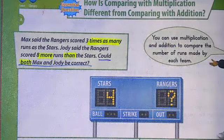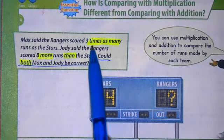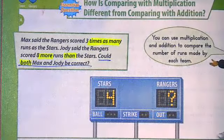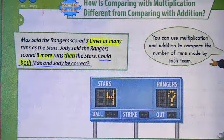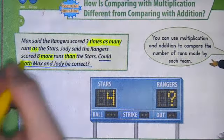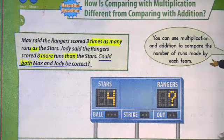Okay, so as I have read through this problem, I have noticed that some of the key words were times as many as. And then I see the word more. Then I see than. And then I see both. So those are all some key words.